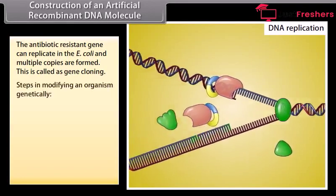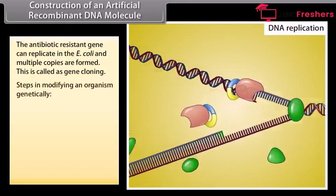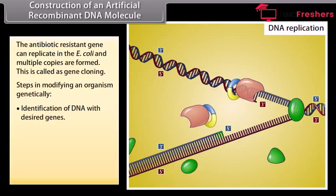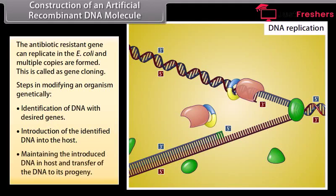Steps in modifying an organism genetically: identification of DNA with desired genes, introduction of the identified DNA into the host, and maintaining the introduced DNA in host and transferring the DNA to its progeny.